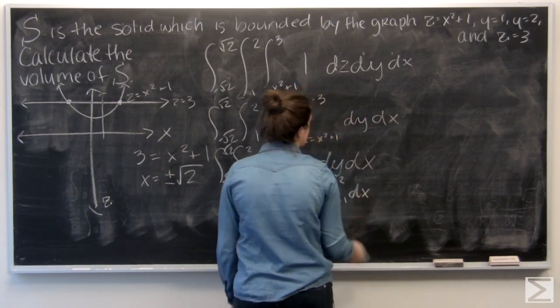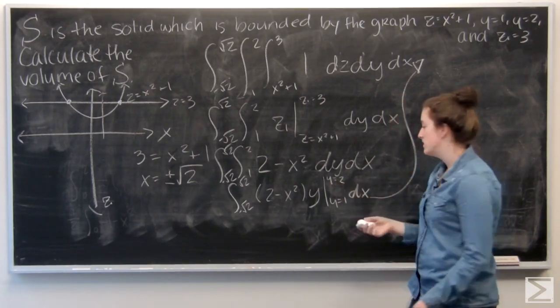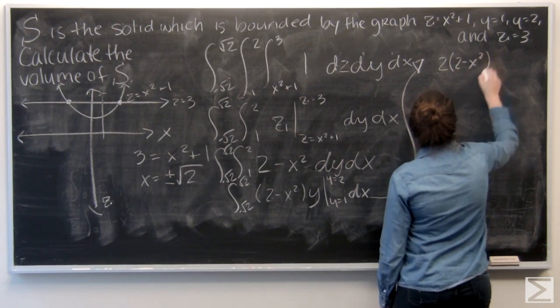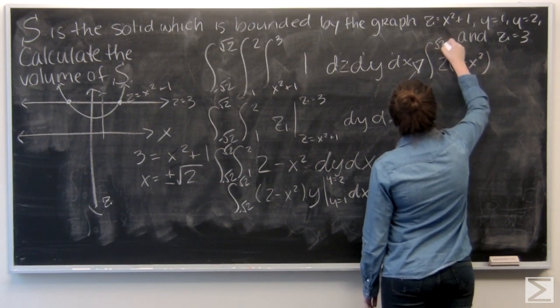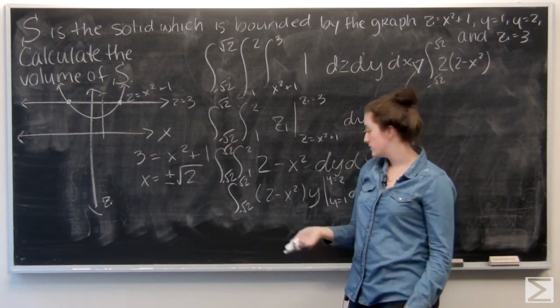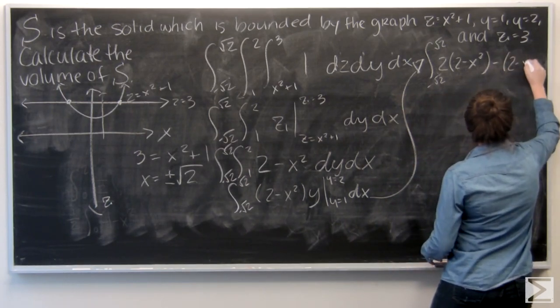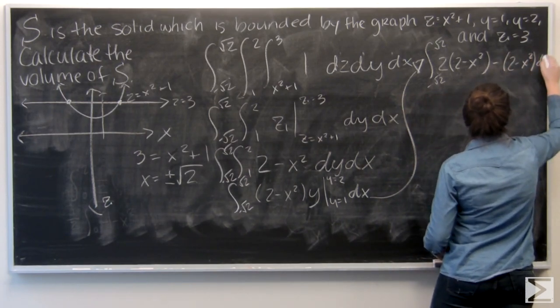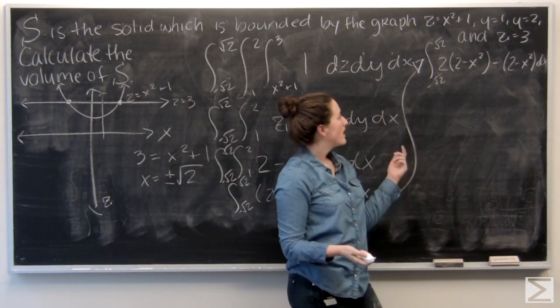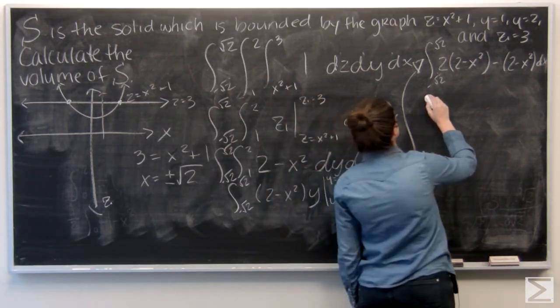dz is still tagging along. Alright, move up here. So first I'm going to plug in 2 for y. So 2 times 2 minus x squared. And now I want to plug in 1 for y. So that's just 2 minus x squared. So these are like terms, so I'm going to go ahead and subtract. 2 minus 1 is 1, so I'm just left with 2 minus x squared. That's a little bit easier.